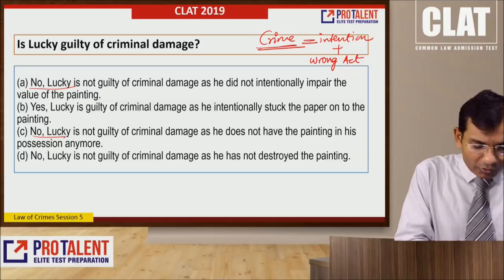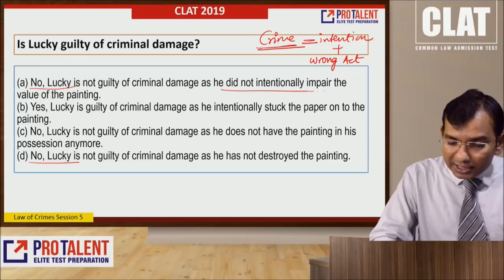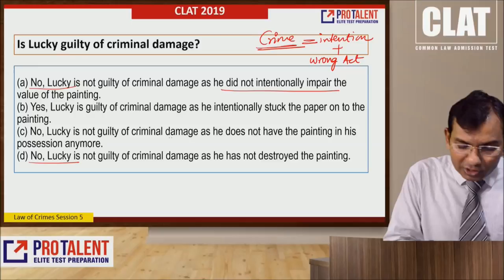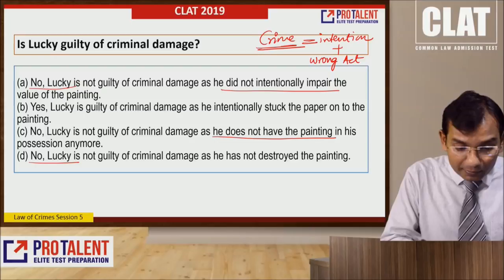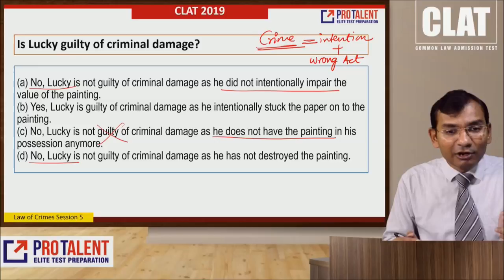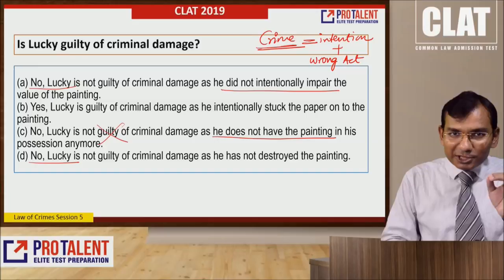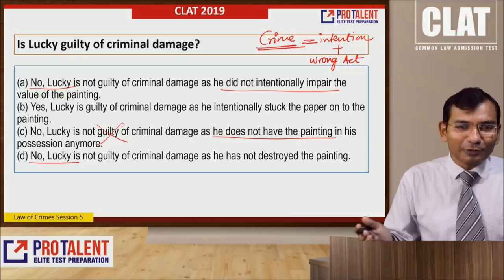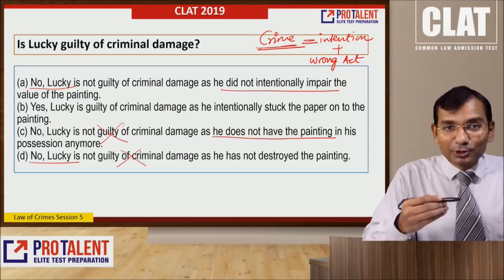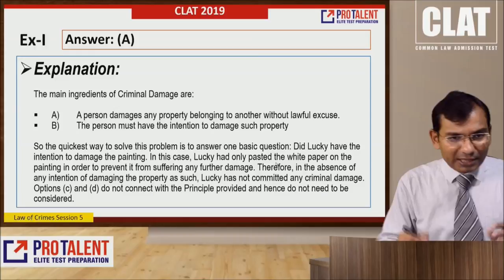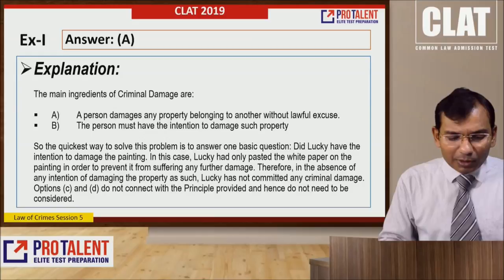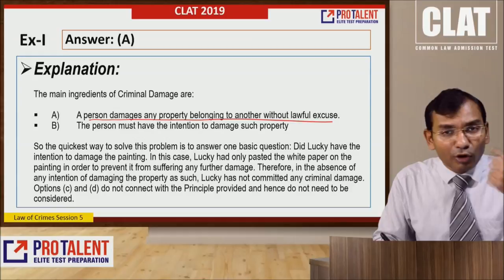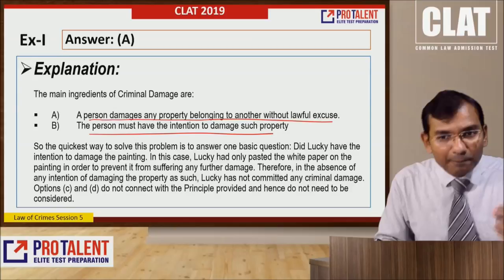There are three 'no' options. Let's check: Option A says Lucky is not guilty of criminal damage as he did not intentionally impair the value of the painting — possible. Option B says not guilty because he does not have the painting in his possession anymore — that's wrong, the painting was in his possession. Option C says not guilty because he has not destroyed the painting — but destruction is not required for criminal damage; even reducing value counts. Since Lucky did not act intentionally, the answer is A.